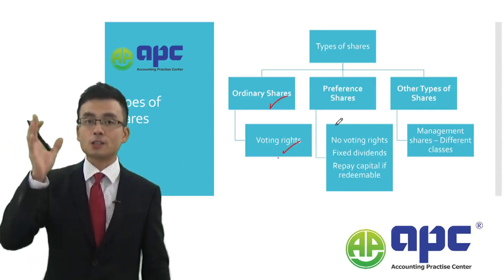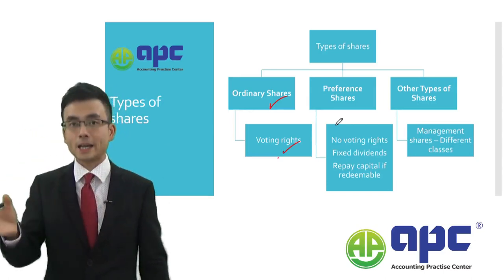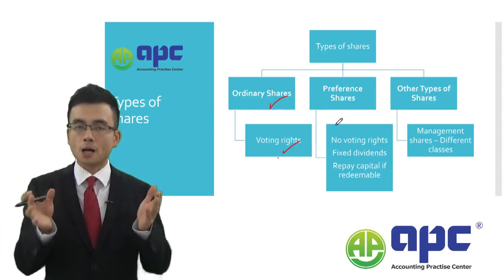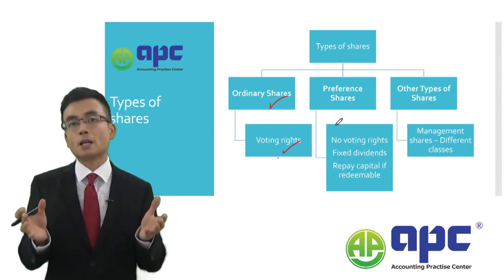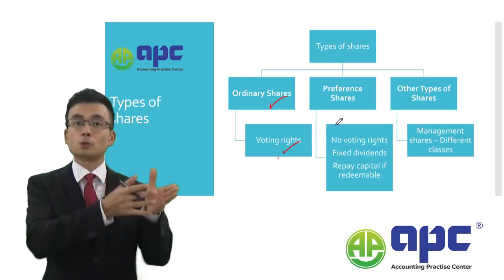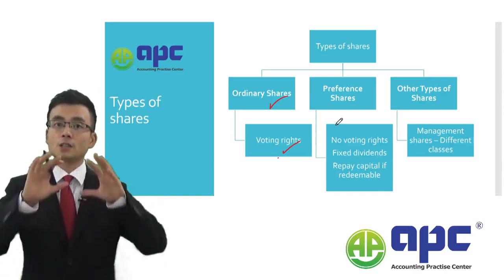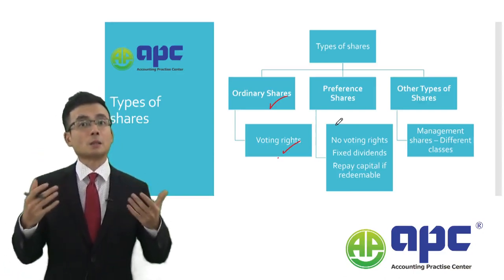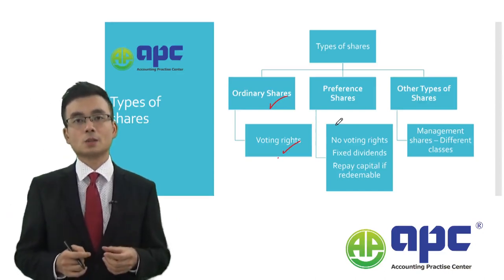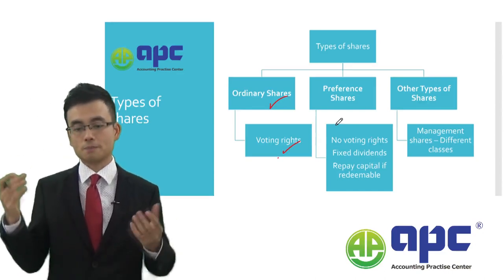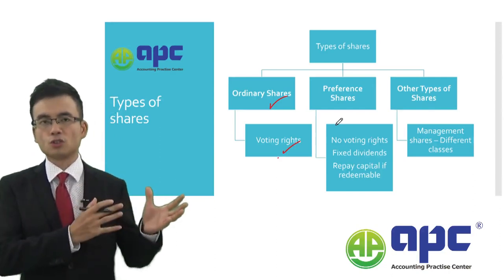They have voting rights to vote for or against the amount of dividend payment or other major issues proposed by the board of directors. They've got voting rights because they control the business — they are the bosses of the business. That's the ordinary shares.